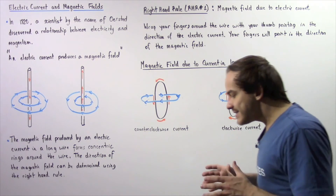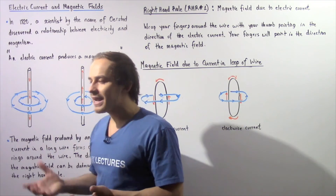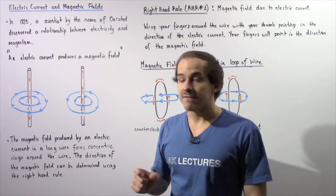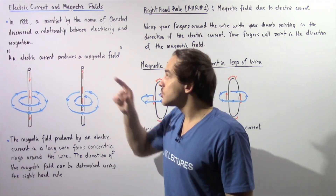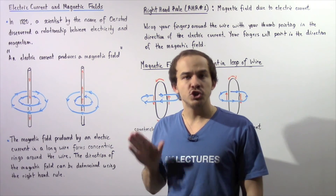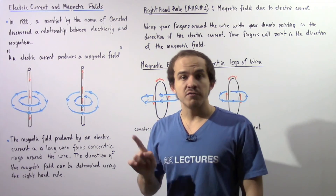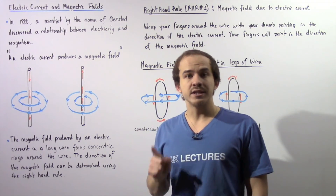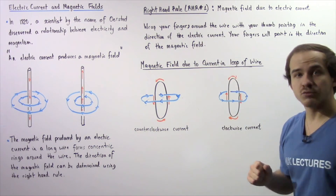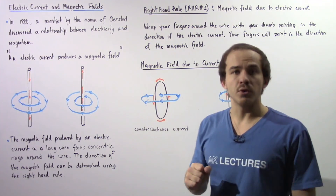Once again, there exists a relationship between electricity and magnetism. Any time we have an electric current within a wire, that electric current will produce a magnetic field, and the direction of the magnetic field can be determined using the right-hand rule, also known as right-hand rule number one.